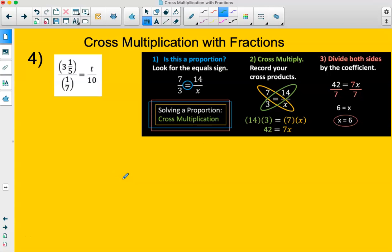This is cross multiplication with fractions problem number four. First step we need to take is make sure it's a proportion and that we can actually use cross multiplication. Proportions are when you have two equal fractions. I see an equal sign and then I see two fractions, so this is a proportion. We're missing a variable, so this is a situation where you can solve the proportion using cross multiplication.